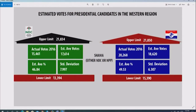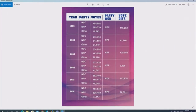Shama is a constituency that the model says could go to either NDC or NPP. NDC's estimated was 17,614 but they actually had 15,461 — dropping about 2,000 votes. NPP's estimated was 18,000 plus; they actually got about 20,000 plus — almost 2,000 in excess. When you look at Shama, it is more likely to fall to NPP than to NDC.